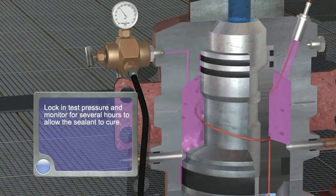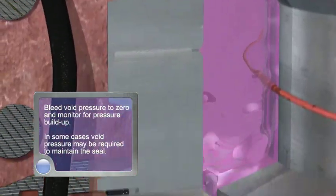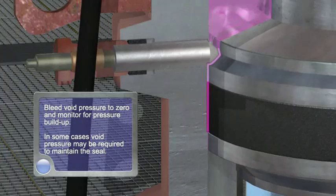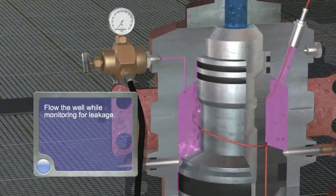Lock in test pressure and monitor for several hours to allow the sealant to cure. Bleed void pressure to zero and monitor for pressure build-up. In some cases, void pressure may be required to maintain the seal.